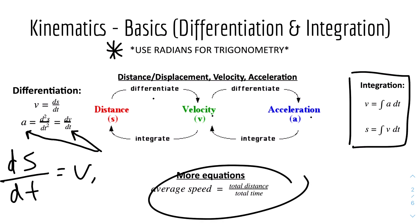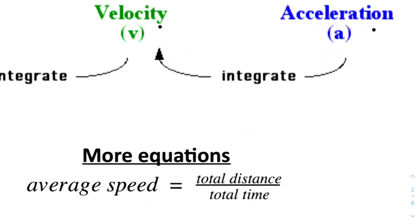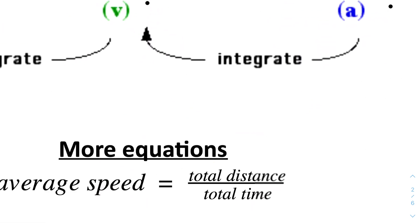Here is the equation for average speed. Average speed equals the total distance over the total time. One key thing to note is that it's the total distance and total time.